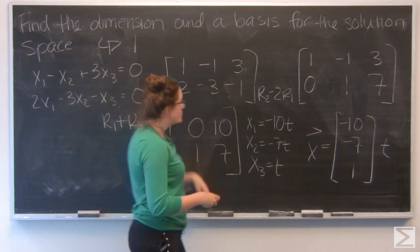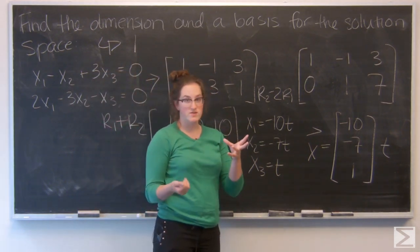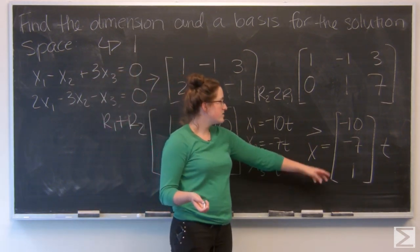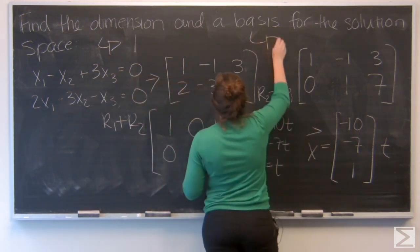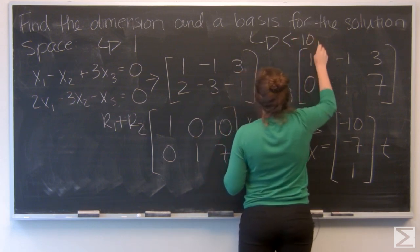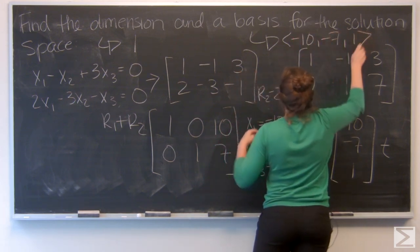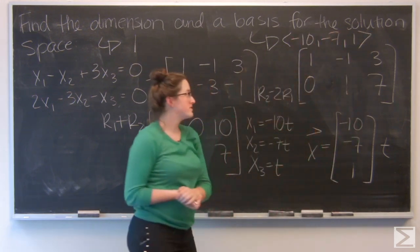A basis for the solution space is just going to be the vectors that I've got in x. So here, I only have one vector: negative 10, negative 7, 1. That vector is the basis for my solution space, and I'm all finished.